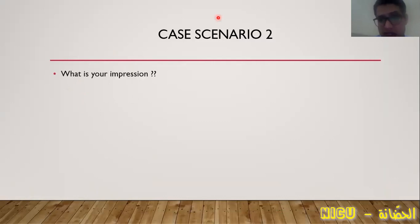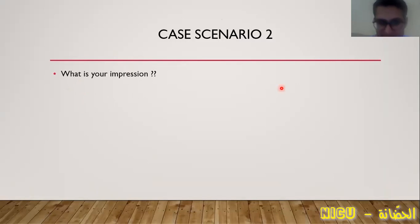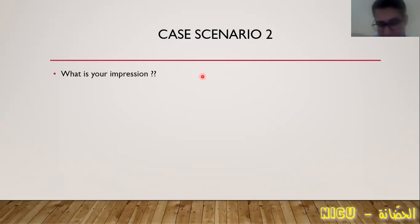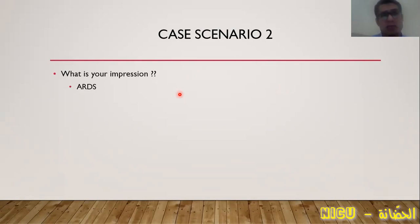The chest X-ray showed bilateral infiltration involving most of the lung tissue bilaterally. Echo showed normal left systolic and diastolic function, normal pulmonary pressure, and normal right atrial pressure. The impression is non-cardiogenic pulmonary edema — what is called ARDS (Acute Respiratory Distress Syndrome). This patient developed ARDS. How do we know the patient has worsened? Bilateral lung infiltration with progressive patient deterioration.